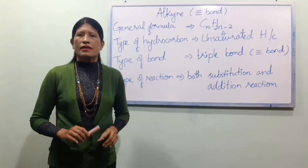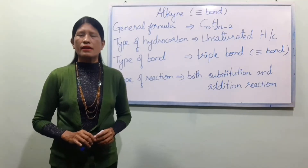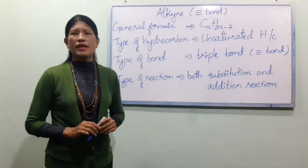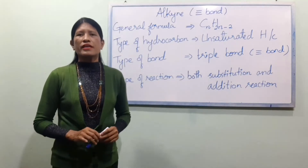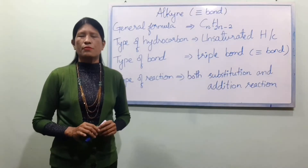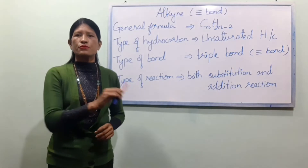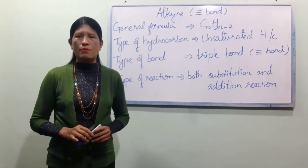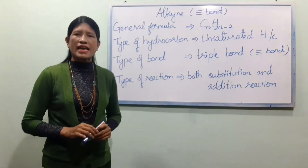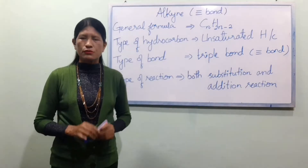LK hydrocarbon general formula CnH2n-2. Types of hydrocarbon are unsaturated hydrocarbons. Types of bond are carbon to carbon. Types of reaction are both substitution and addition reaction.